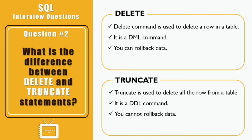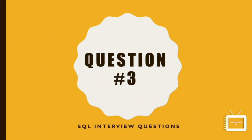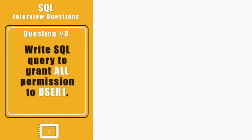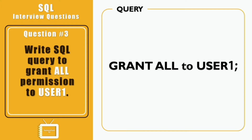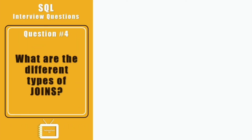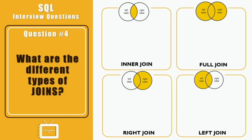Question three: write an SQL query to grant all permissions to user one. The GRANT statement is used to give privileges to a specific user, role, or all users to perform actions on a database object. Here, ALL PRIVILEGES is the shortcut for granting all system privileges.